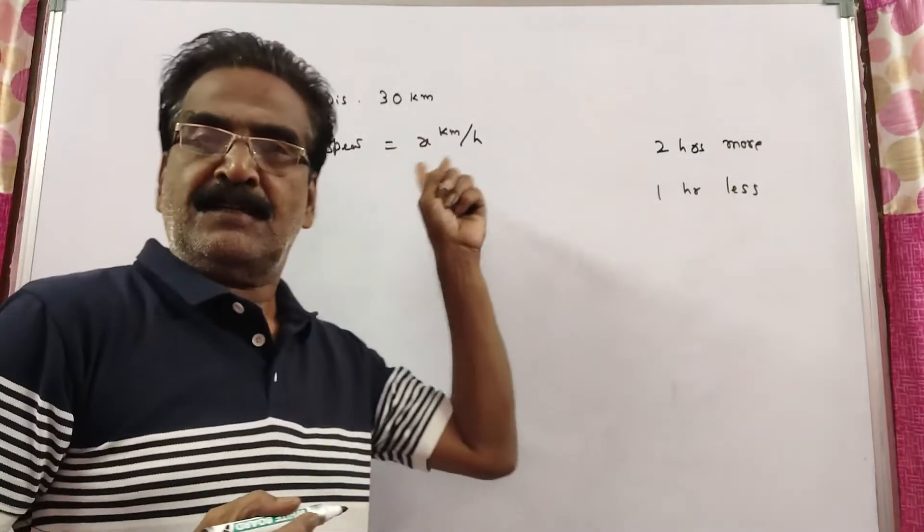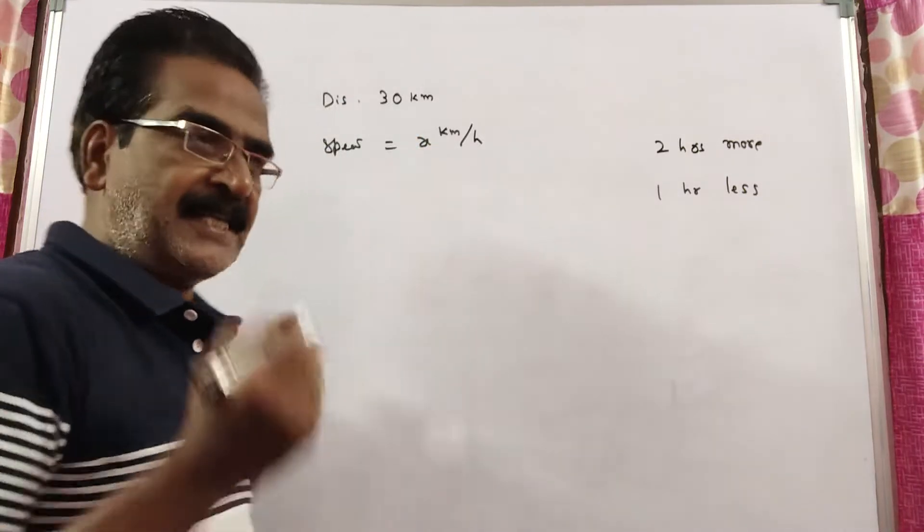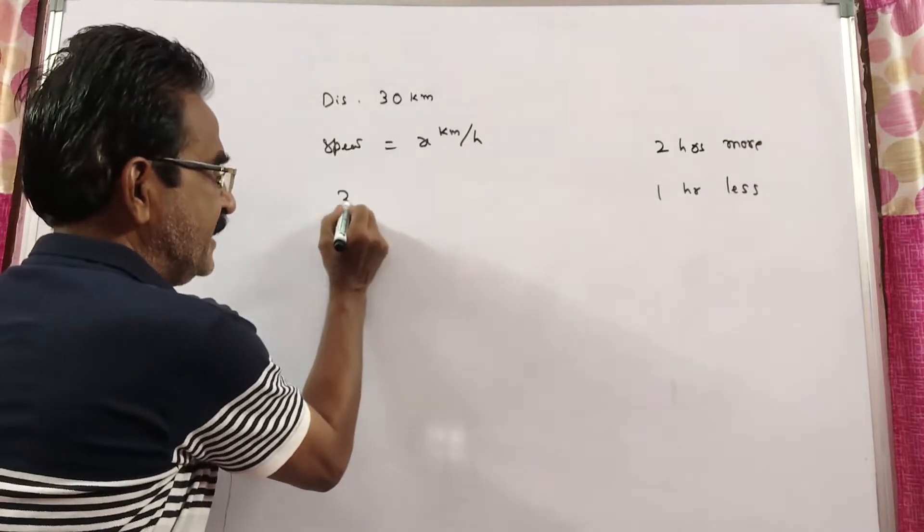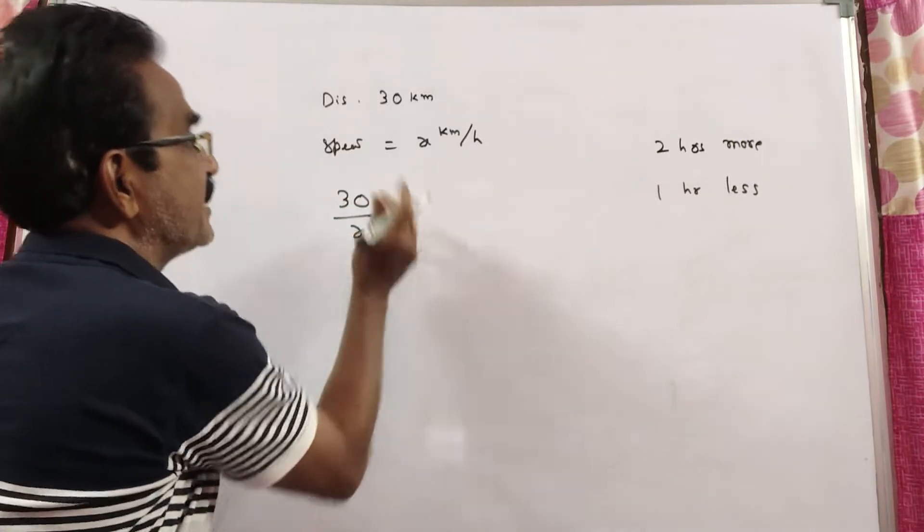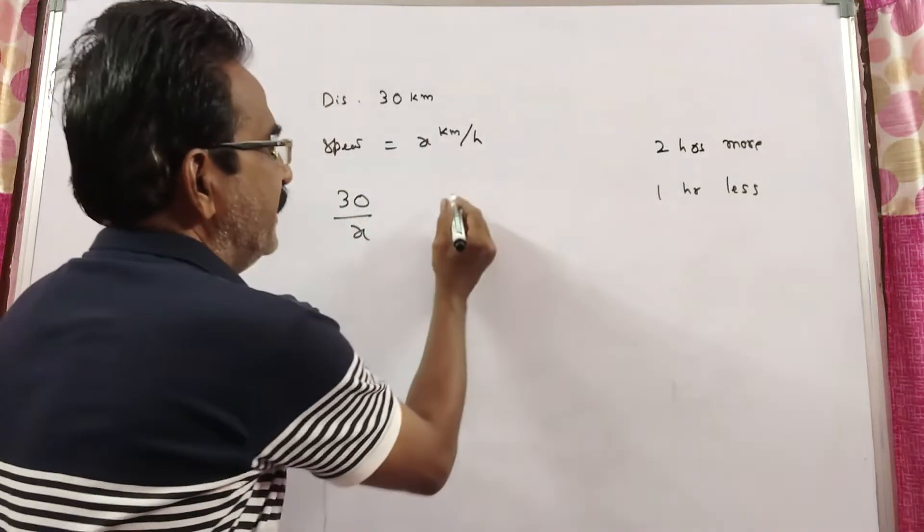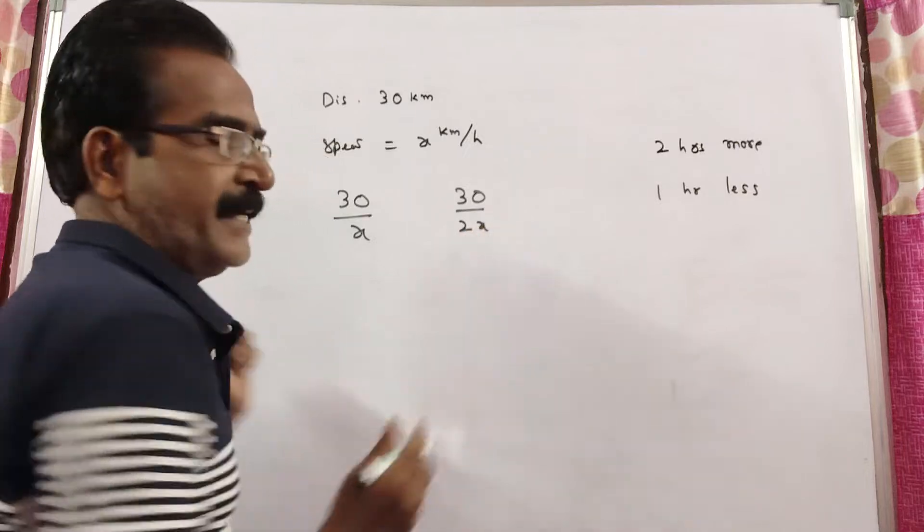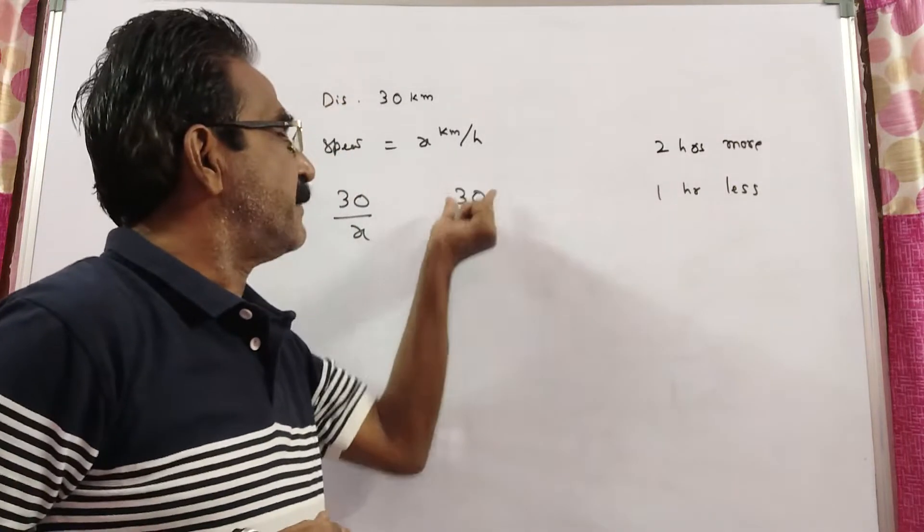Friends, say the speed of Arun is x kilometers per hour. If he moves at x kilometers per hour, he takes 30 by x hours, distance by speed. If he doubles his speed, then he takes 30 by 2x hours, distance by speed.